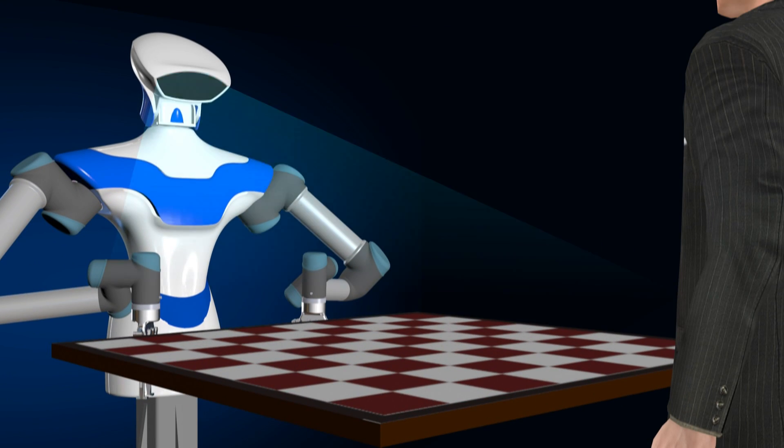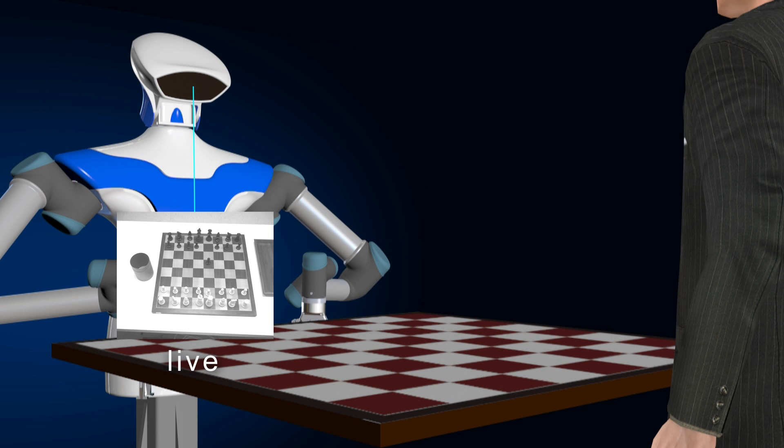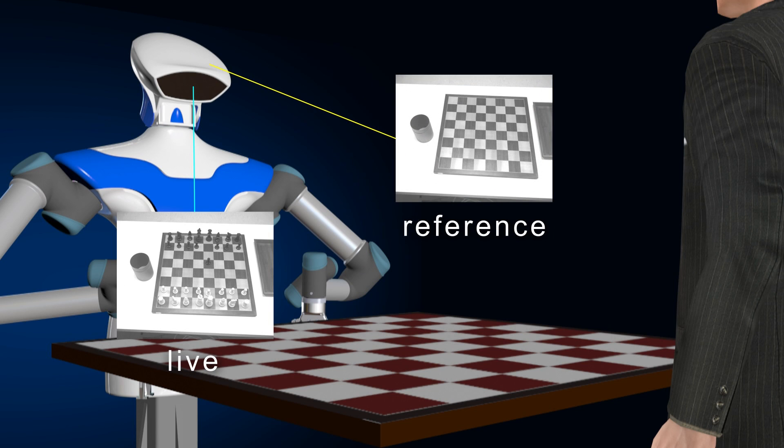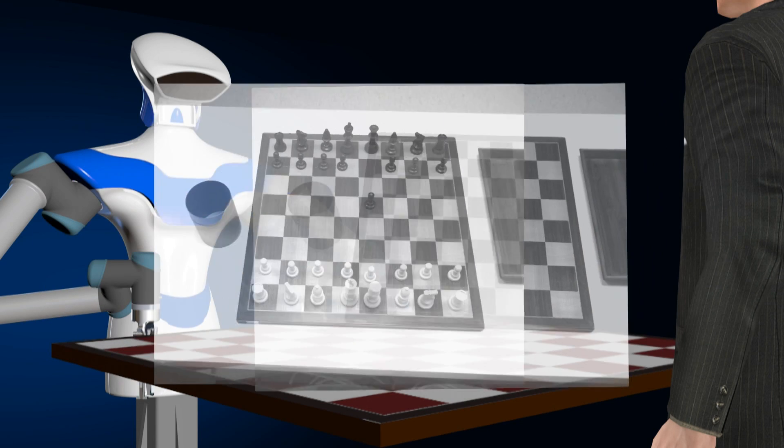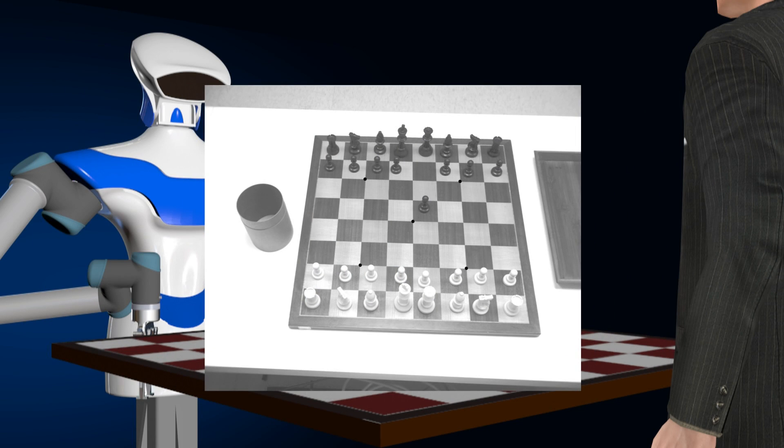When playing chess with an opponent, it uses a regular chessboard, not an instrumented one. IVS employs a 3D depth camera that first detects the chessboard position.